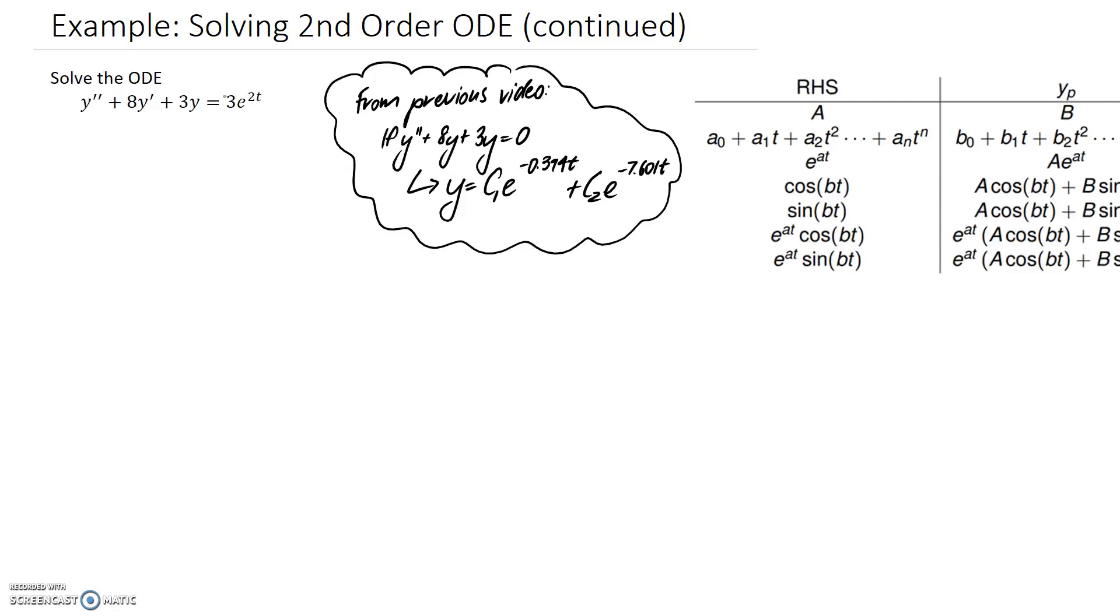So this is going to continue on from the previous video, which found the solution to this differential equation, which you can see is quite similar to this one here. So what we can see is the difference between them is on the right hand side of this first one we had equal to 0, and the right hand side here,